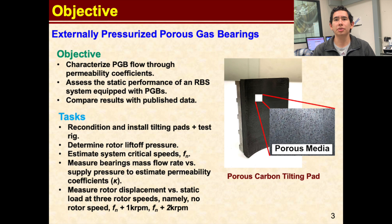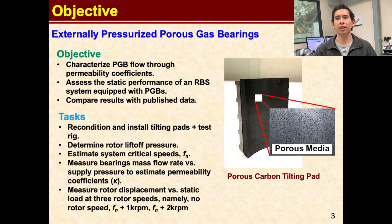Our goal for this project was to characterize a rotor bearing system that uses porous carbon graphite bearings by determining their permeability coefficient and static stiffness at supercritical speeds. In doing this, we first had to revamp our test rig. Then we determined at what pressure the rotor lifted off of the bearings. We found the system natural frequency in order to know what speeds are considered supercritical. We measured the flow rate through the pads and calculated the permeability coefficient. Finally, we measured how much the rotor moved downwards when we applied a certain load in order to determine the stiffness.